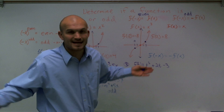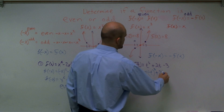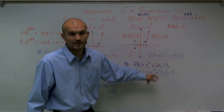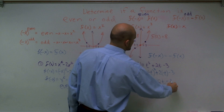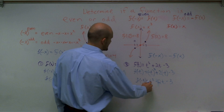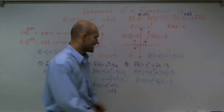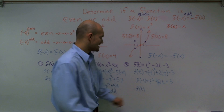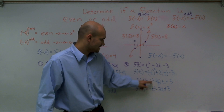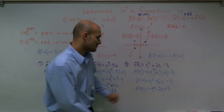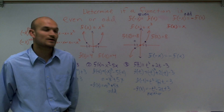For the last one, the input is t rather than x — it doesn't matter, just plug in the negative version. I get negative t squared plus 2 times negative t minus 3. Negative t squared gives positive t squared, and positive times negative gives negative 2t minus 3. Is this the same as the original function? No — the signs differ. Is it the negative version of f of t? Multiplying the original by negative 1 gives negative t squared minus 2t plus 3. Comparing to my result, the signs are all different. Therefore this function is neither even nor odd.